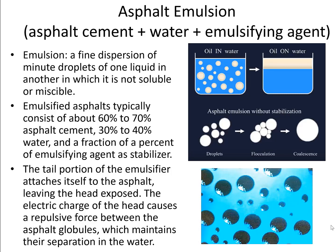The water and the emulsifier together are called soap. The emulsifier is added to stabilize the emulsion. Emulsified asphalt typically consists of about 60% to 70% asphalt cement, 30% to 40% water, and a fraction of a percent of emulsifying agent. This is because asphalt and water without any stabilization will quickly separate. Emulsifiers allow the asphalt droplets to become charged — either a positive charge or a negative charge — and because all droplets have the same charge, they stay away from each other.